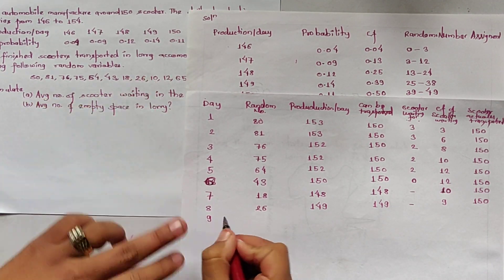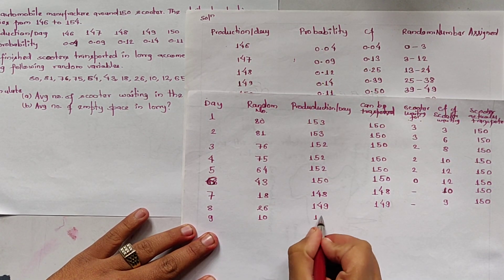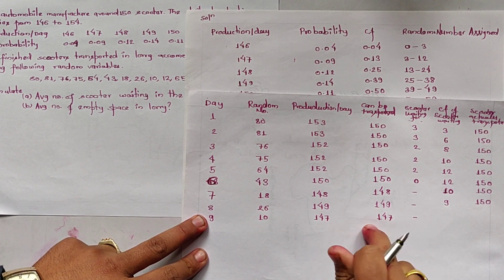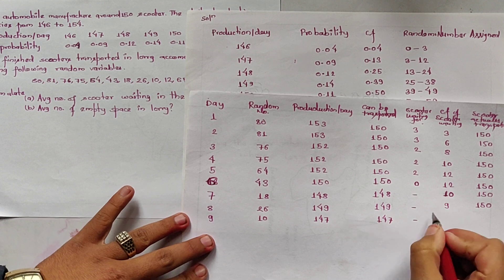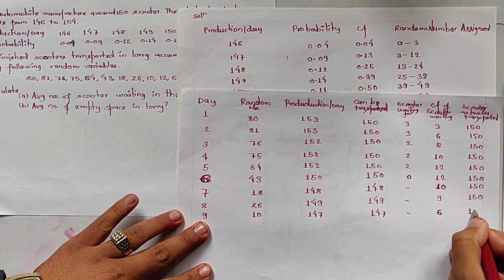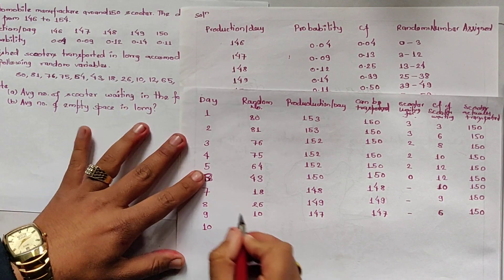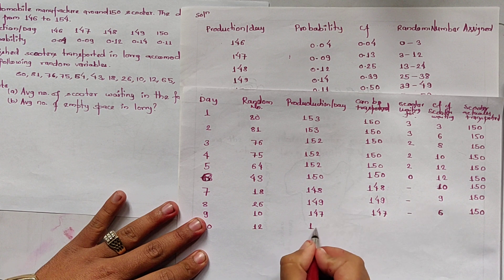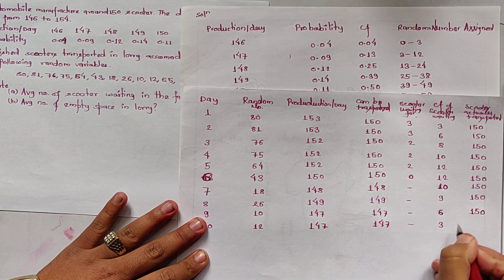Day 9: random number is 10. 10 lies between 04 and 12, so production is 147. Three more waiting scooters are cleared, cumulative waiting becomes 6, actually transferred is 150. Day 10: random number is 12. 12 also lies in the same range, so production is again 147. Three more waiting scooters cleared, cumulative waiting becomes 3, actually transferred is 150.